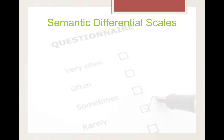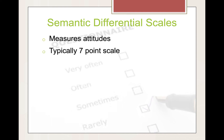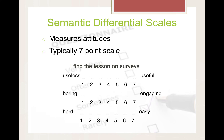Semantic differential scales are kind of interesting. They measure attitudes and are typically a seven-point scale. For example: 'I find the lesson on surveys' and you can rate it anywhere between useless and useful, boring and engaging, hard and easy. You'll notice there is a neutral point. If you want to, you can take that neutral point out and make a six-point scale.